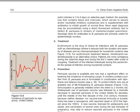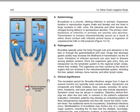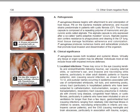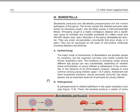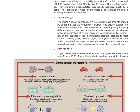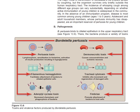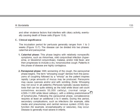The next virulence factor is the adenylate cyclase toxin. The adenylate cyclase toxin decreases the chemotaxis and phagocytic effect of phagocytes. The last virulence factor is a film — which promotes the attachment of the bacteria to host cells. Those are the different virulence factors for Bordetella pertussis.